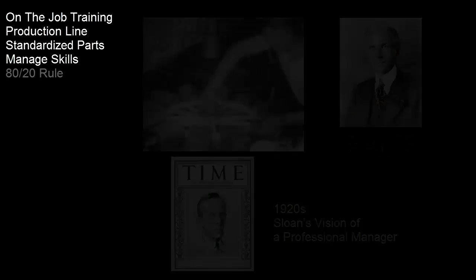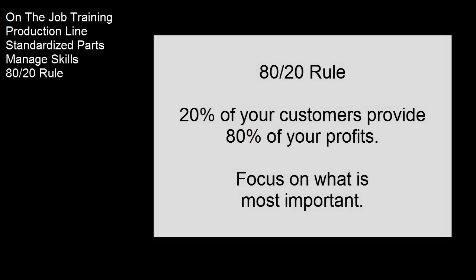About the same time, in 1909, Pareto studied property ownership in Italy, where 20% of the people owned 80% of the land. That observation evolved into today's 80-20 rule: focus on what is most important.